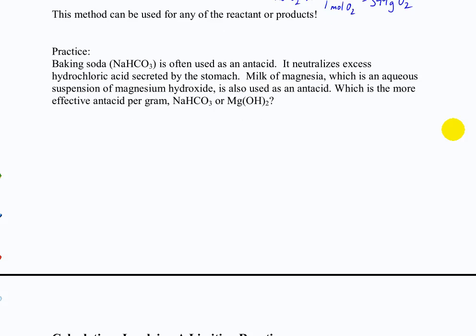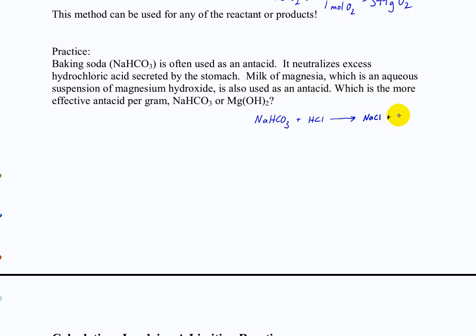Let's write out these equations. First, we take sodium bicarbonate and react it with HCl, the major acid in the stomach. The products are NaCl plus H₂CO₃. That carbonic acid quickly breaks down into carbon dioxide and water. Is that balanced? Yes, it is.